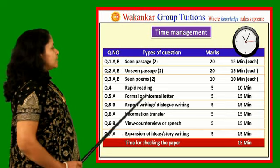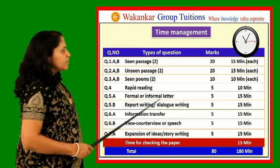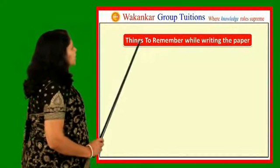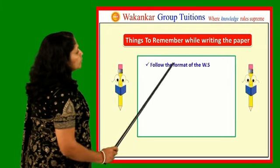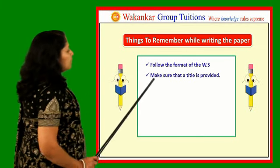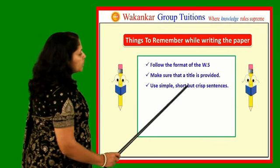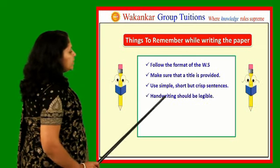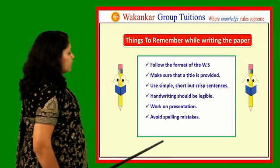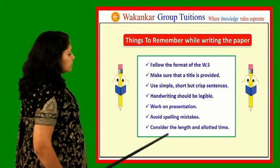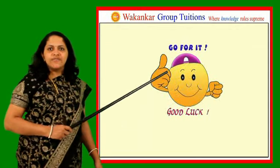Now let us see the time management entirely — in this way you can complete the paper. Now let us see things to remember while writing the paper: follow the format of the writing skill, make sure that a title is provided, use simple, short but crisp sentences, handwriting should be legible, work on presentation, avoid spelling mistakes, and consider the length and allotted time. In this way you will definitely secure the marks.